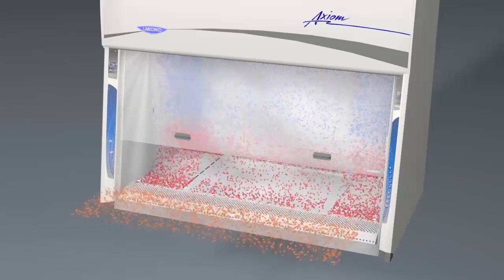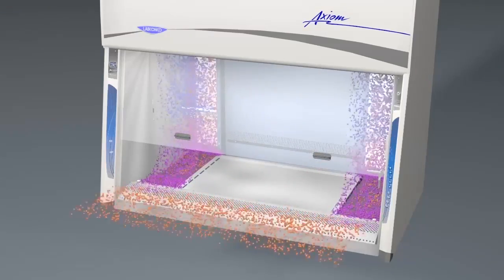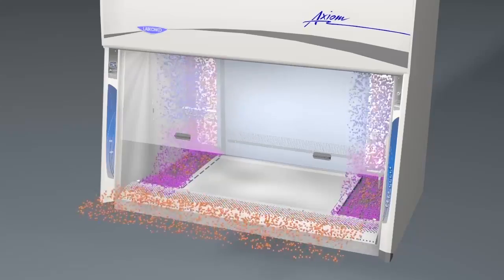Air above the wings of the three piece work surface mixes with incoming air and is recirculated back into the supply airflow system.